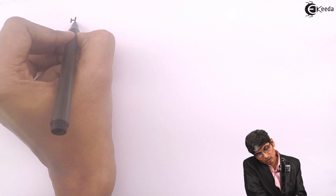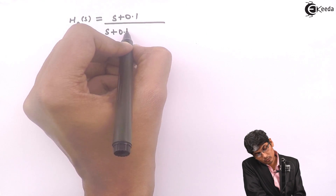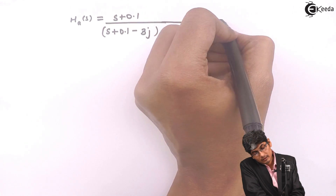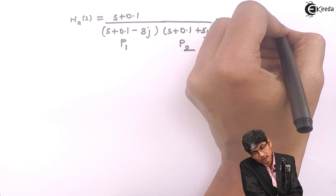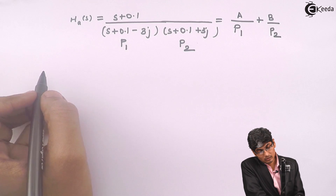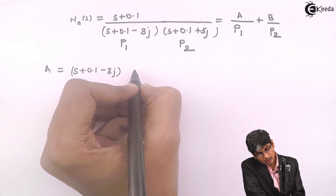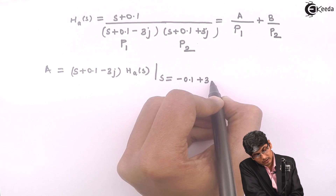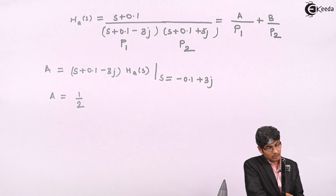Now using partial fractions, HA of S equals (S plus 0.1) divided by (S plus 0.1 minus 3J) times (S plus 0.1 plus 3J). Let P1 be the first factor and P2 the second. So HA of S equals A over P1 plus B over P2. To find A, I multiply by P1 and evaluate at S equals minus 0.1 plus 3J.